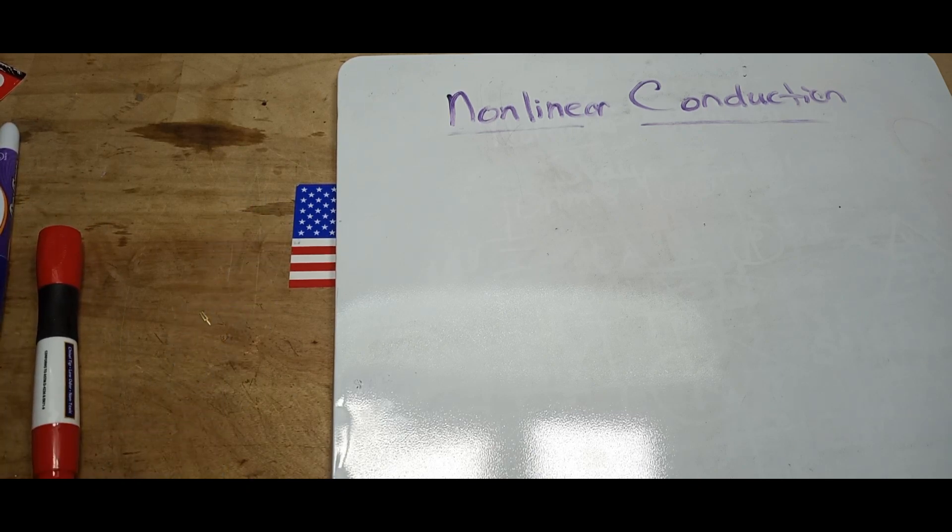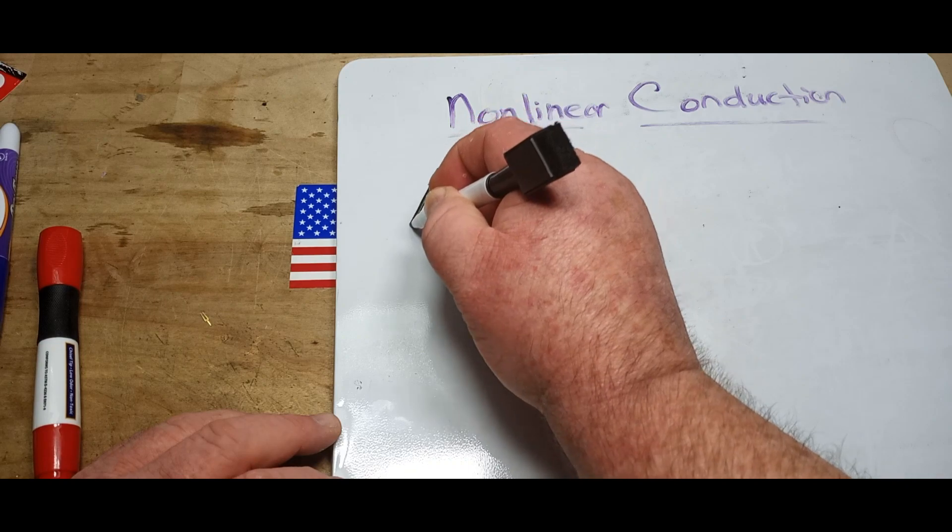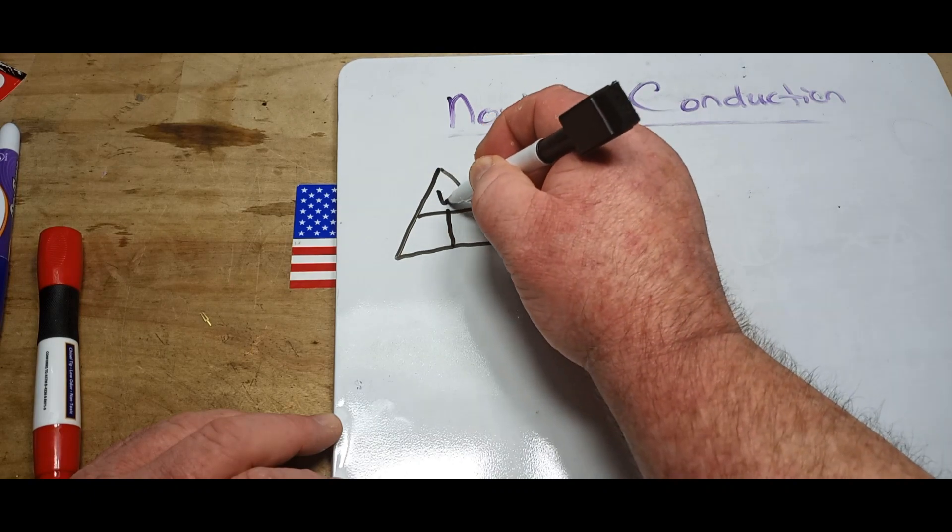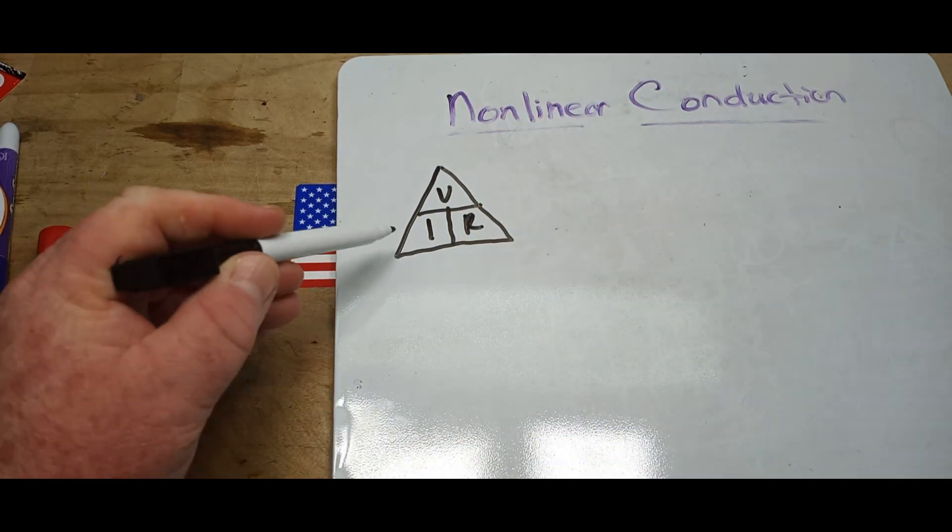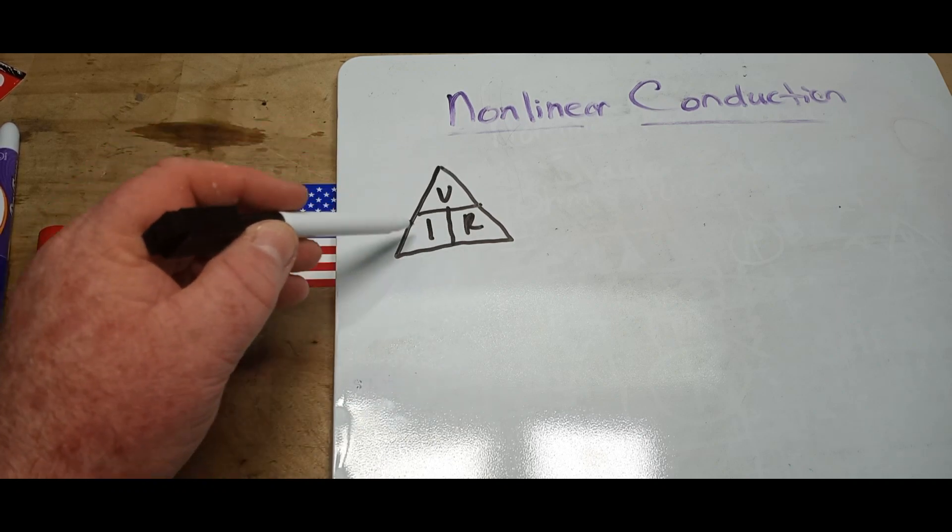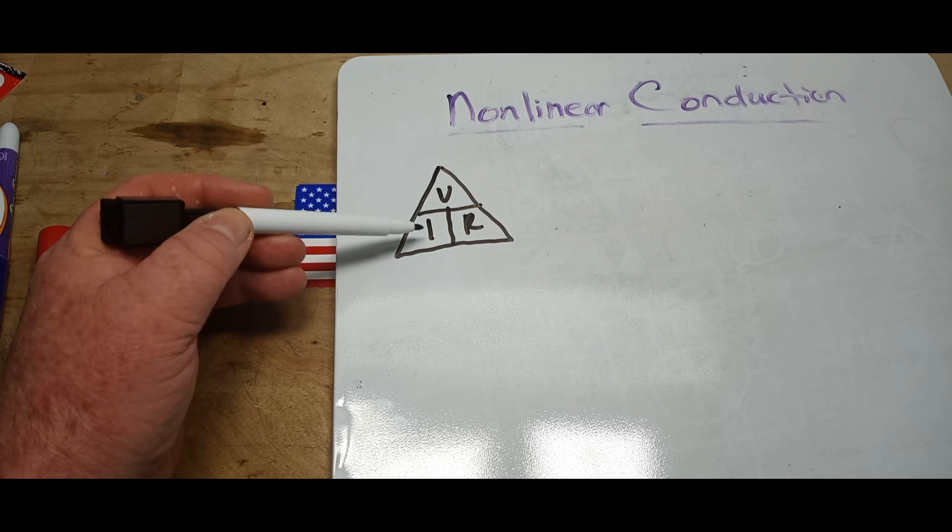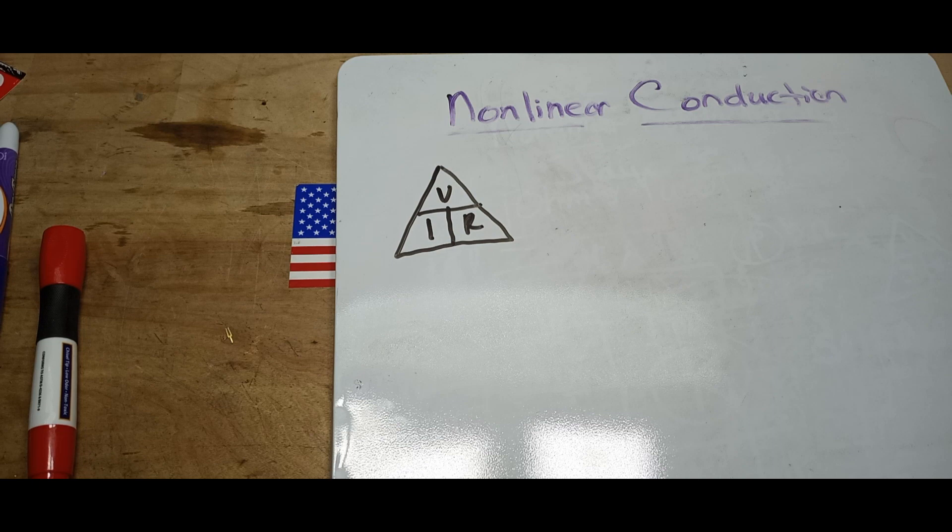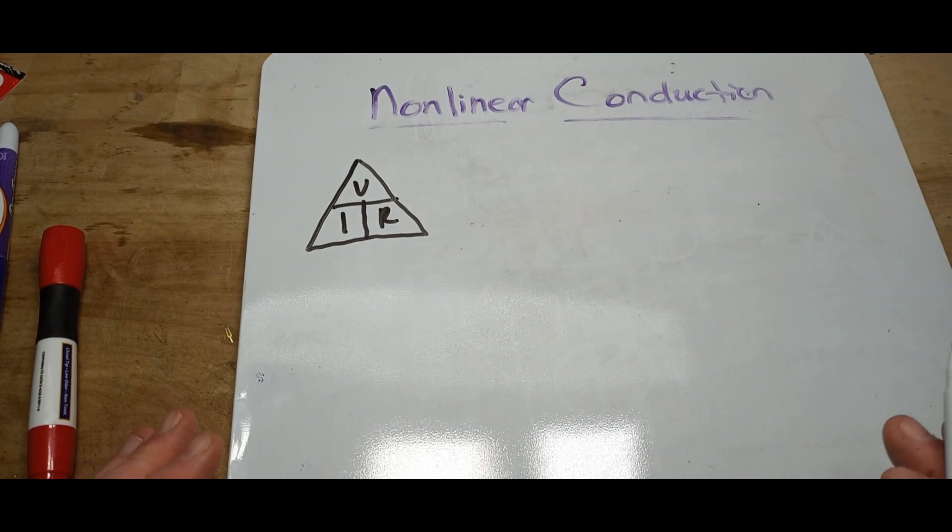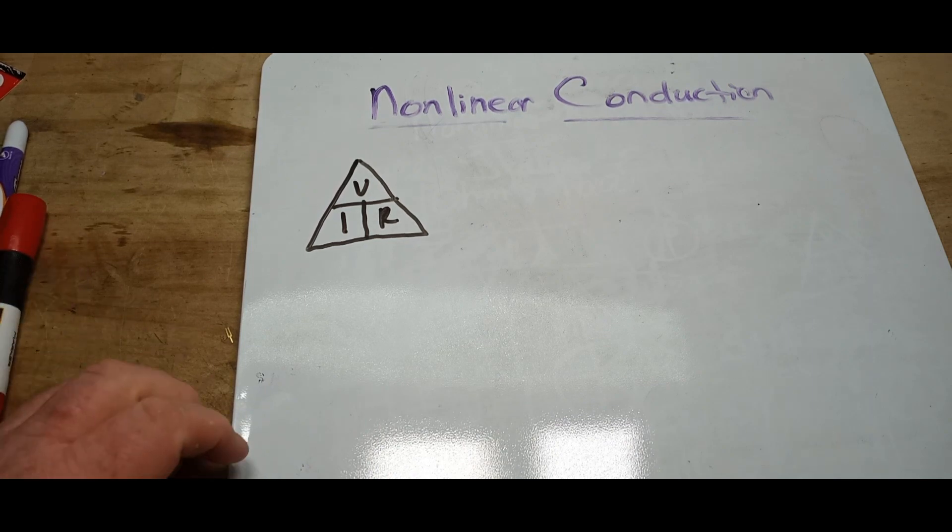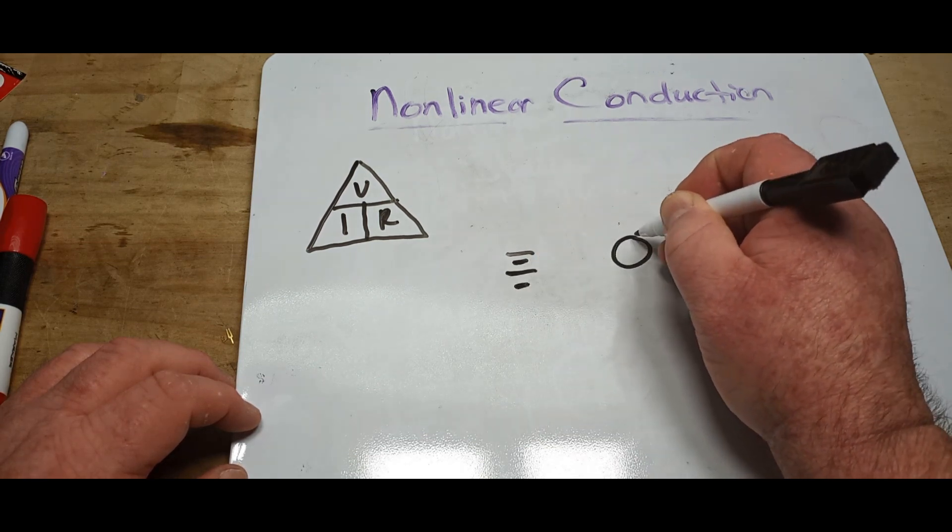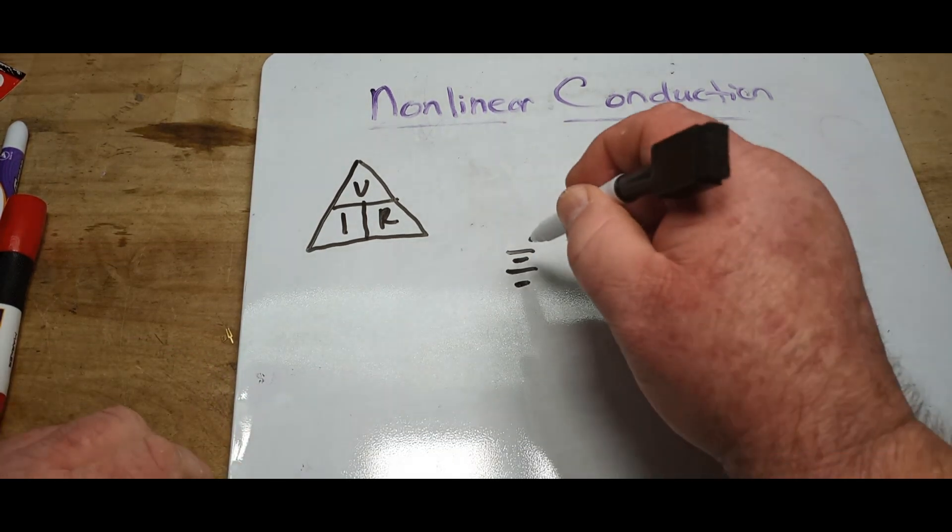We're not going to get into Ohm's law, I've covered that in my basic electricity and electronics playlist, so if you're interested check that out. But just to be brief, here's our Ohm's law triangle: V, I, R - voltage, current, and resistance, and how they're all related to each other. If you want to find one you multiply, if you want to find this one you divide, it's pretty simple. So let's start off by talking about linear conduction and resistance.